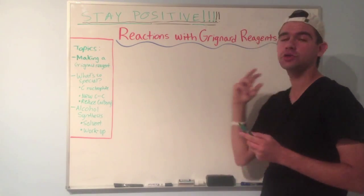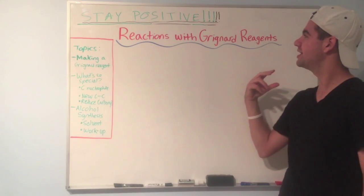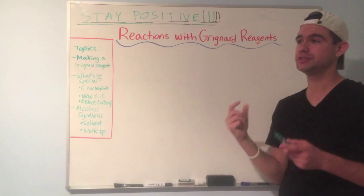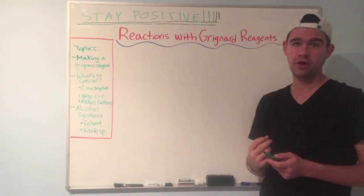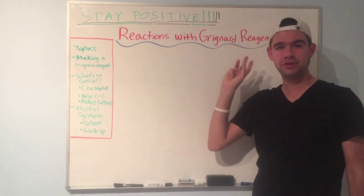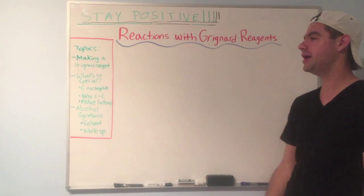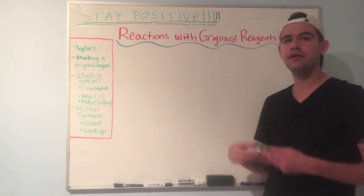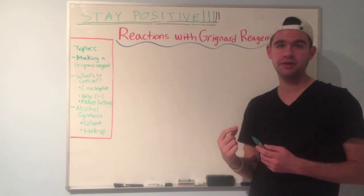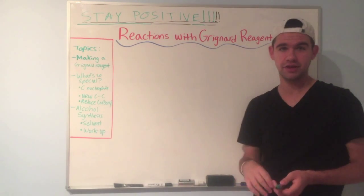First of all, why are Grignard reagents cool? Grignard reagents are cool because A, they let us form new carbon-carbon bonds, which is very rare in OCHEM and it's awesome. Another reason, we can reduce carbonyls to alcohols using Grignard reagents. And finally, we get to see how carbon could be a nucleophile, which is something we've not seen in any of the videos thus far.